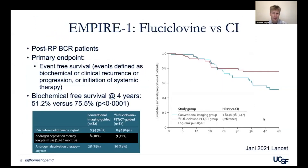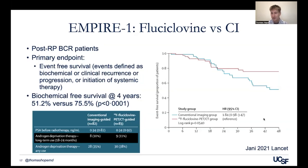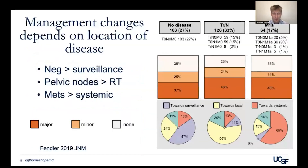In terms of how results impact outcomes, the Empire I study evaluated fluciclovine versus conventional imaging for radiation therapy planning in patients with biochemical recurrence. Patients did better at four years if staged with fluciclovine compared to conventional imaging, with a biochemical recurrence-free survival rate of 76% versus 51%. This is impressive with fluciclovine, which we know performs less well than PSMA PET. PSMA PET itself has major changes in management in over 50% of patients imaged.